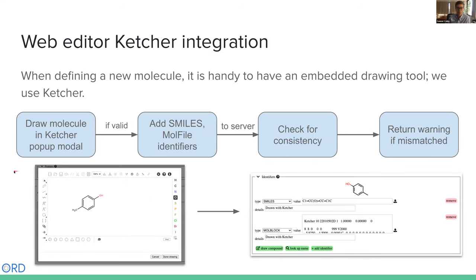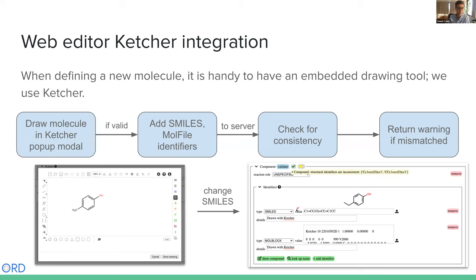We also want to allow users to draw structures, so we have some integration with Ketcher. In one of its implementations, Ketcher returns SMILES and a molblock, so a user can draw a structure and we automatically add the corresponding SMILES and molblock identifiers. We send those back to the server to check for consistency — if you have multiple identifiers that don't actually match, such as if you manually change your SMILES string after drawing, we have a warning that these structures don't match, relying on RDKit to parse them both and compare them.